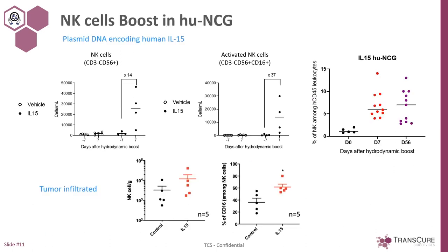Another example looking at NK cell populations in boosted versus non-boosted animals, boosted here with IL-15, which not only increases the total amount of NK cells in peripheral blood but also the proportion of these cells expressing CD16. You can also observe the stability of the boost — before the boost, one to two percent max of NK cells. Thanks to the boost, we increase that to five, six, seven percent, and this is stable up to two months. We have validated that if more time is needed, we can apply a second boost and therefore maintain a higher rate of NK cells and monocyte/dendritic cells for four to five months.